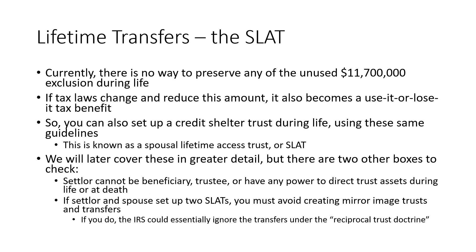That's what you really need to know about credit shelter trusts created at the death of the settlor. Is there any way to preserve the unused exclusion during life? The answer is no — there is no portability election equivalent during life, and that's a big deal because if tax laws change and this amount is reduced, this $11.7 million also becomes a use-it-or-lose-it tax benefit. For the first time ever, we're looking at a situation where taxpayers could lose this during life.